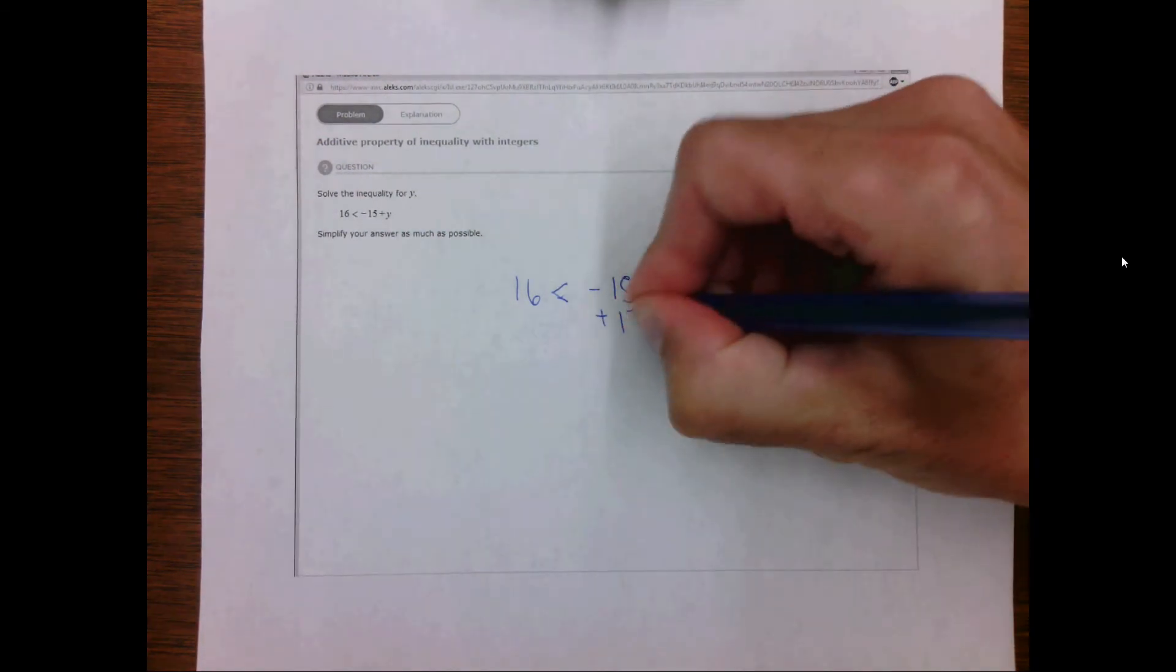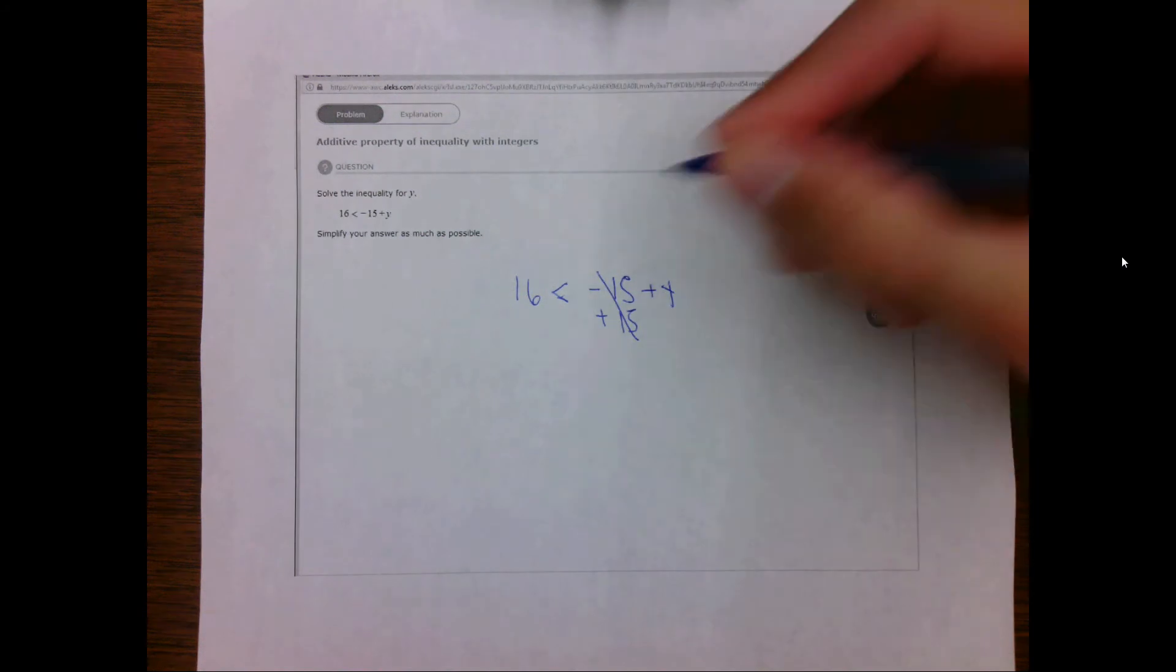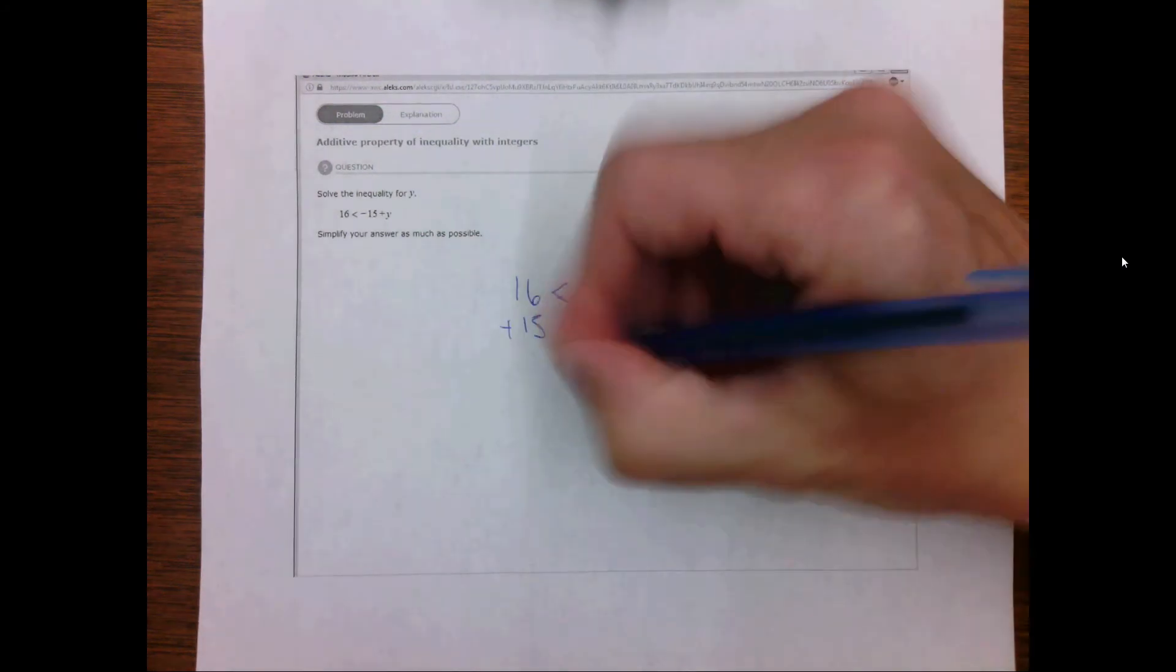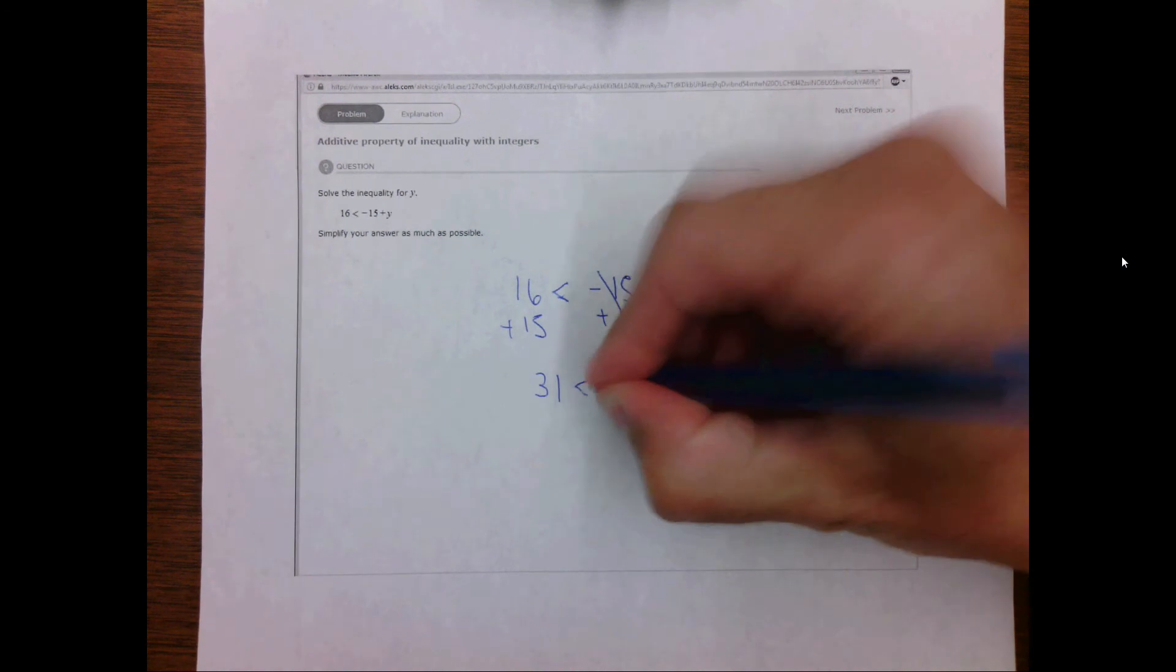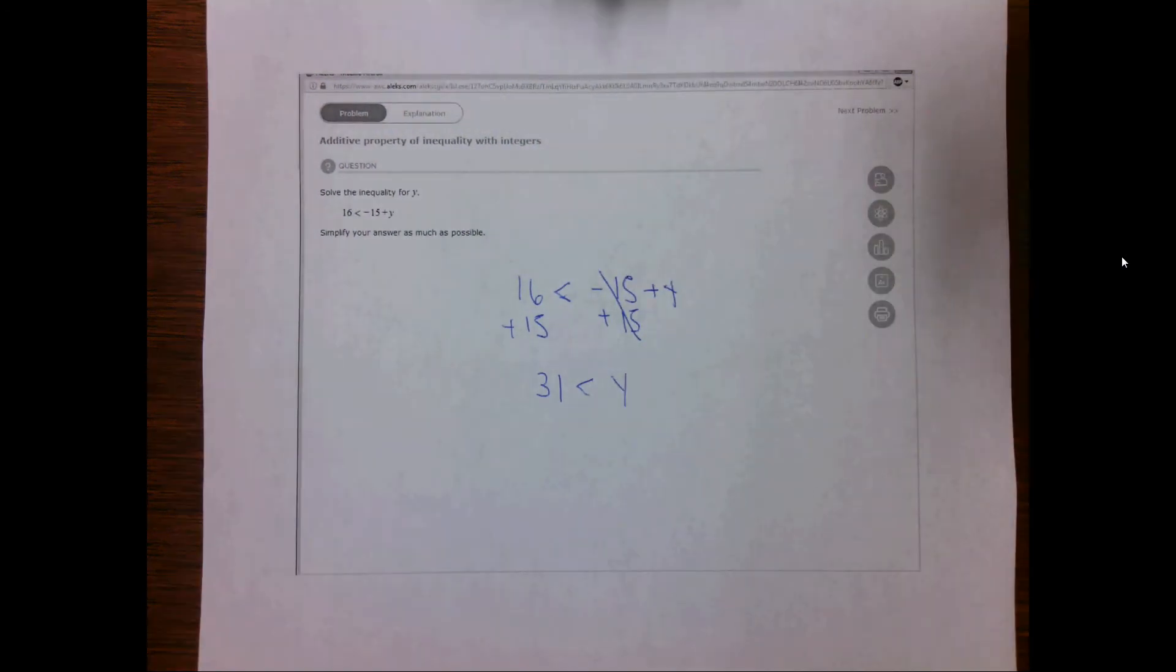I'm going to add 15 to both sides. It'll cancel out. Over here I'm going to add 15. 16 plus 15 is 31. Keep the less than sign the same and now we just have y by itself.